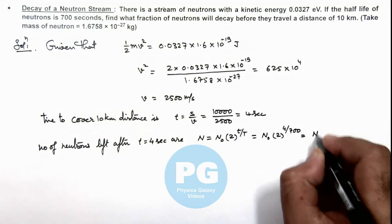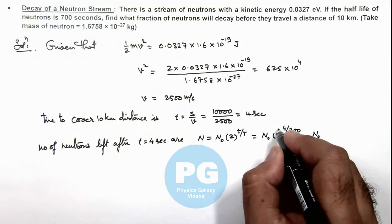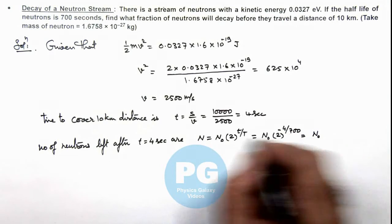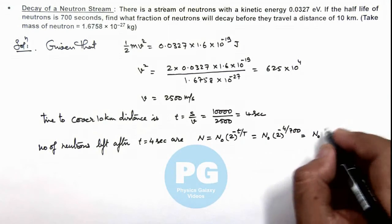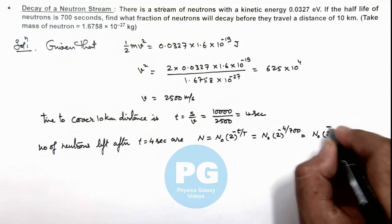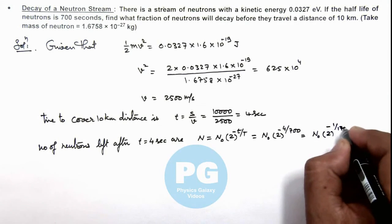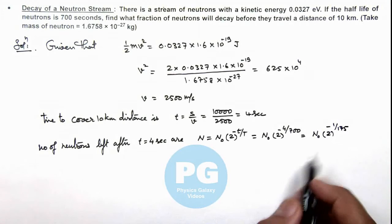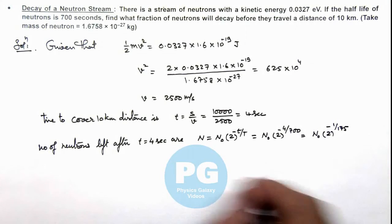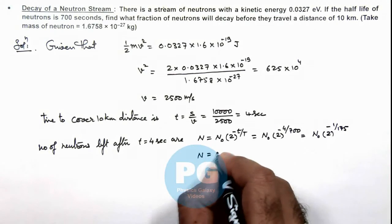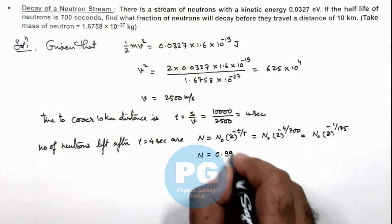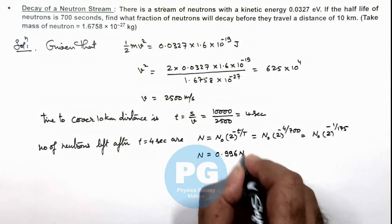So this will be N₀ × 2^(-1/175). If we numerically simplify the value, this gives us N = 0.996 N₀.